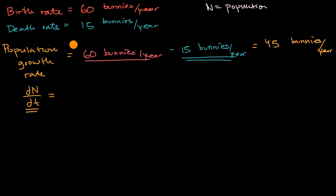Is equal to your birth rate, 60 bunnies per year, and the notation they use for birth rate is just B. They don't use the same rate notation for that. I probably would have, but that's fine.